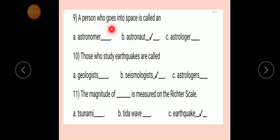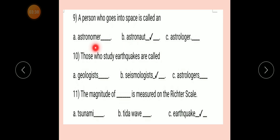Question number 9: A person who goes into space is called a? Option A: Astronomer. Option B: Astronaut. Option C: Astrologer. Correct answer: Astronaut.